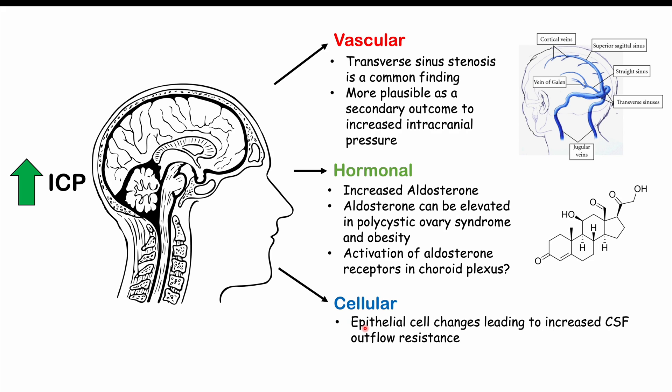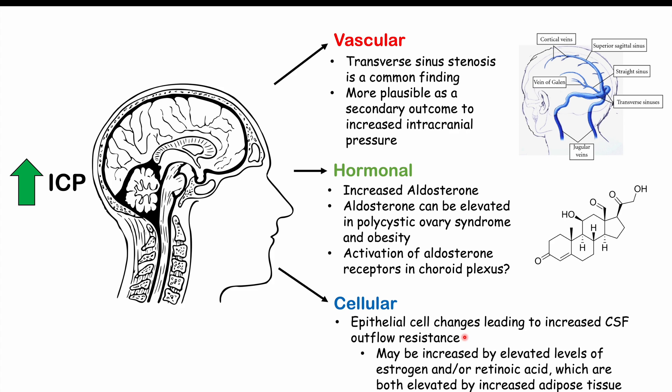The third proposed cause involves cellular issues — epithelial cell changes leading to increased CSF outflow resistance. This resistance may be increased by elevated levels of estrogen and/or retinoic acid, both of which are elevated by increased adipose tissue. A fourth proposed mechanism is reduced lymphatic clearance, which is still under study. The exact mechanism remains unknown, and these are simply proposed theories.